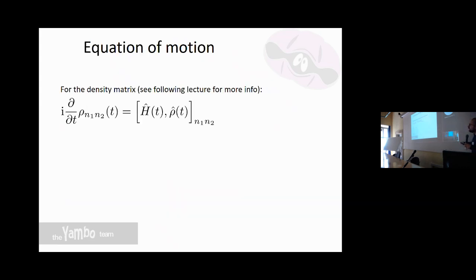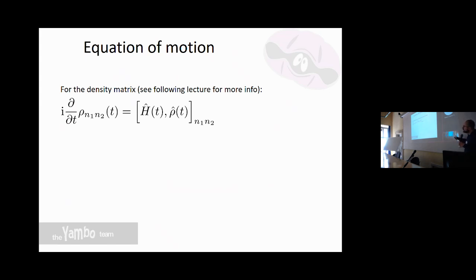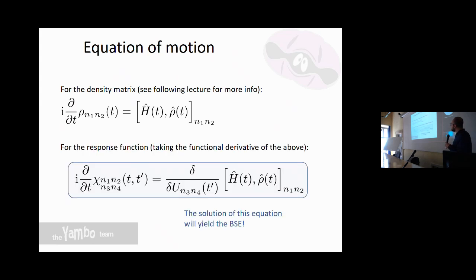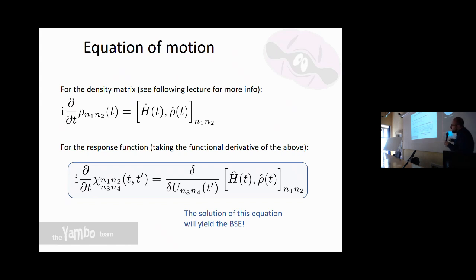We start from the equation of motion for the density matrix — you've seen this already, and will see generalized versions in the following lectures. This gives the evolution of the density matrix. Since we're interested in the response function, we take the functional derivative with respect to the external field of the full equation, giving us an equation of motion for the response function.